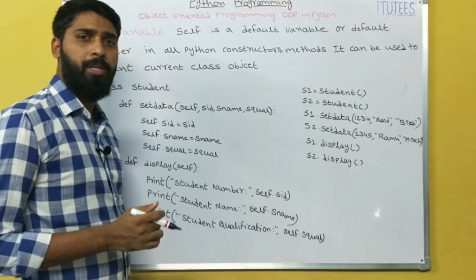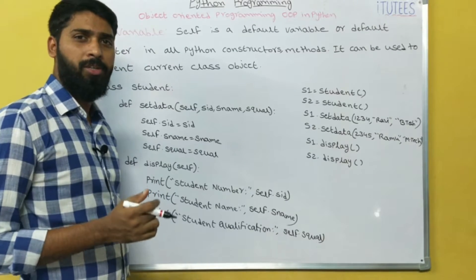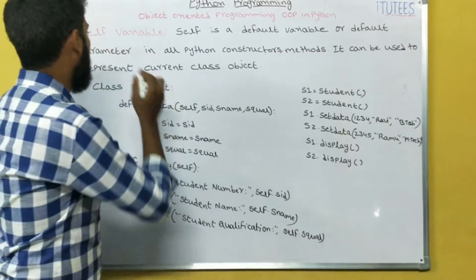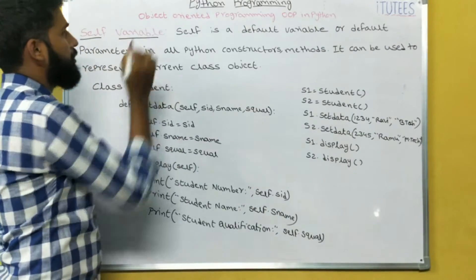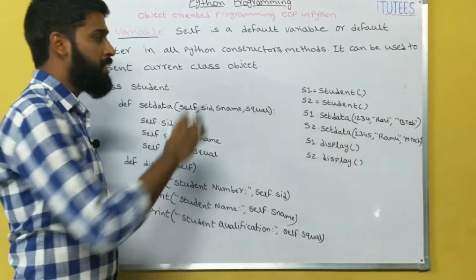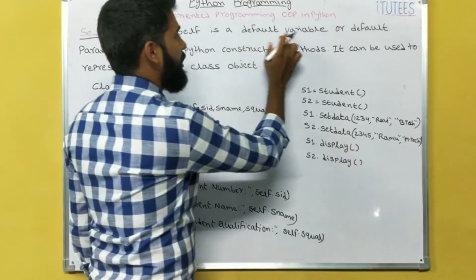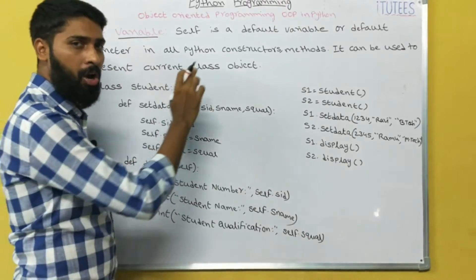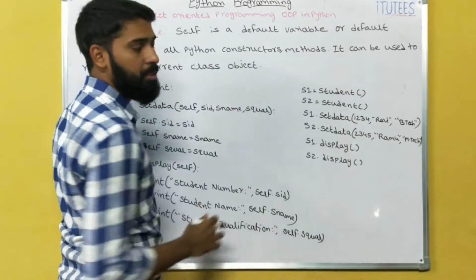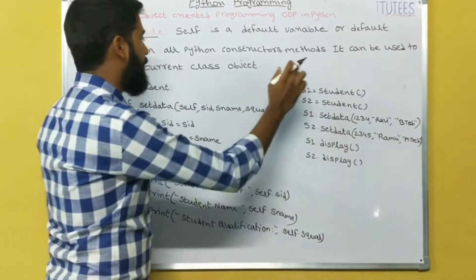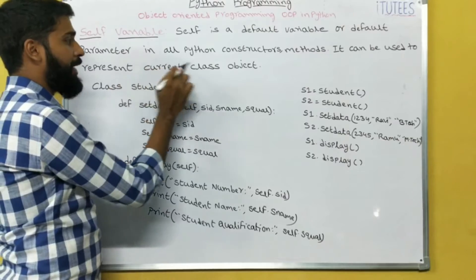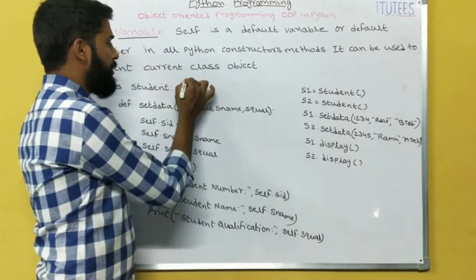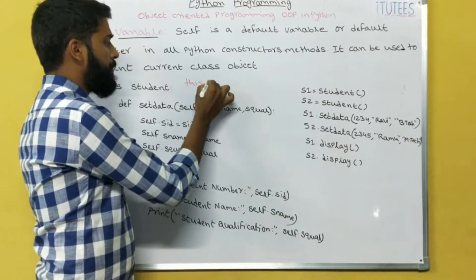Hello friends, welcome to Python programming tutorials. In this class we are going to discuss about self-variable. A self-variable is a default variable or default parameter in all constructors and methods. It can be used to represent the current class object, so it is similar to the 'this' pointer in C++.